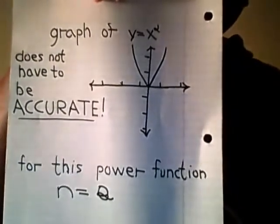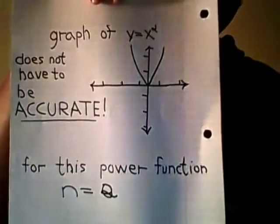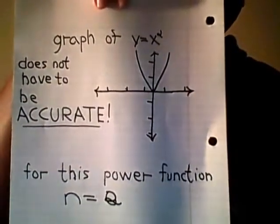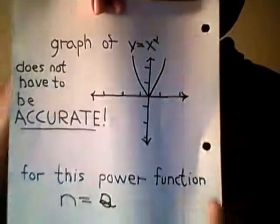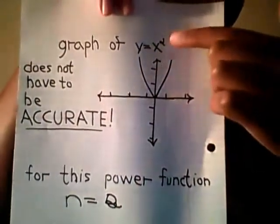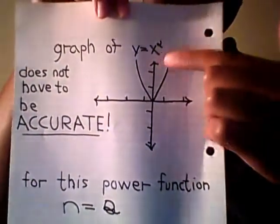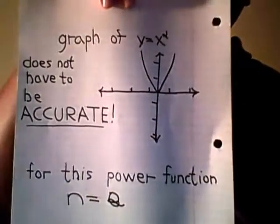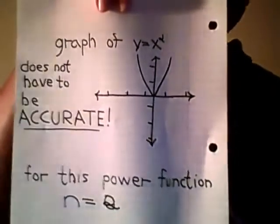So, now, for this power function, y equals x squared, as we can see, n is our exponent up here. It's going to equal 2. And that's how you do the power function for y equals x squared.